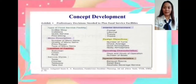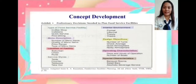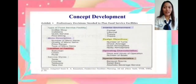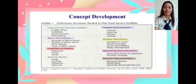Concept development — Exhibit 5: Preliminary decisions needed to plan food service facilities. The type of food service facility includes the coffee shop, cafeteria, quick service, and fine dining. Menu description covers the number of menu items, quality and price range, and type of menu items. The location of the facility may be suburban, urban, or rural. Service styles must be table, counter, tableside, and takeout. The interior environment may be formal, informal, trendy, or themed. Design objectives include number of turns, check average, quiet atmosphere, and noisy atmosphere. Operating characteristics include days and hours of operation and the number of seats. And lastly, special characteristics include banquet rooms, salad bars, and alcoholic beverage service.